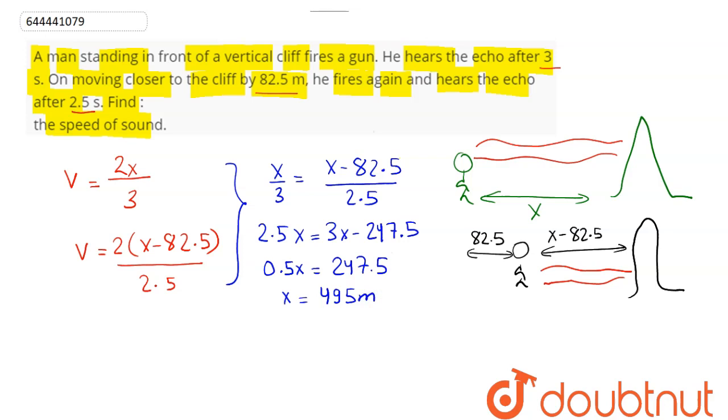Putting this value of x into the first equation, we have the speed of sound as 2x/3. With x = 495, this comes to 2 × 495/3 = 330 meters per second. This is the speed of sound, hence this is our answer.